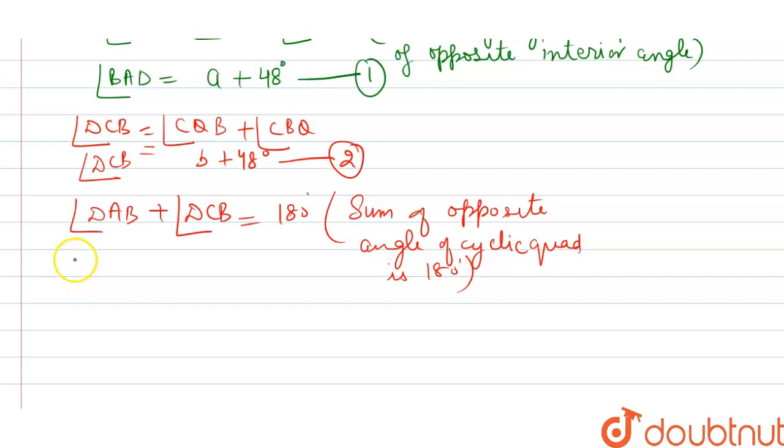So from equations 1 and 2, the value of DAB is A plus 48 degrees, and the value of DCB is B plus 48 degrees, which equals 180 degrees. Since A equals 2B according to the question, substituting: 2B plus 48 plus B plus 48 equals 180 degrees.